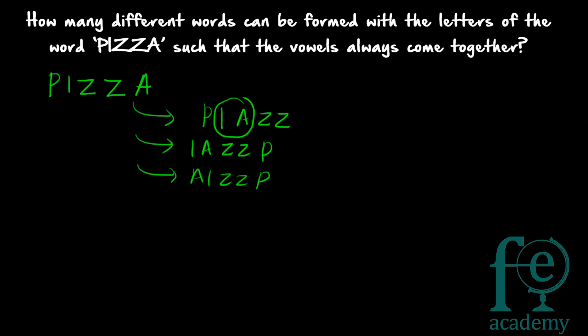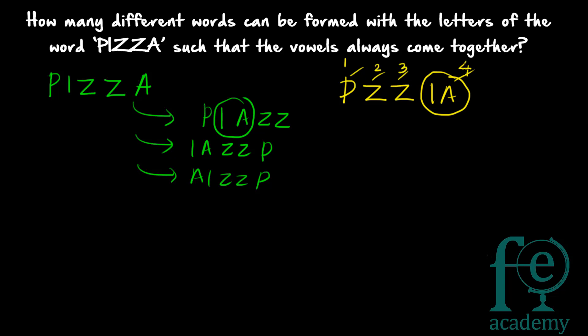So how many different ways can be formed? You have to arrange the letters P, Z, Z, I, A such that I and A are always together. Since I and A should always come together, you consider them as a single entity. So there are four different letters to be arranged: 1, 2, 3, and 4.